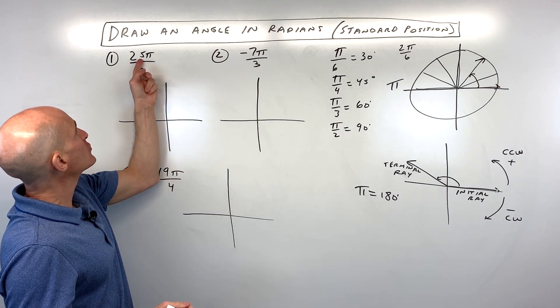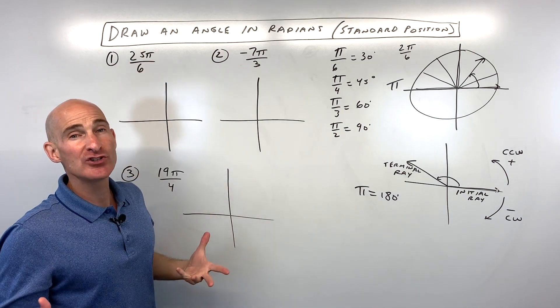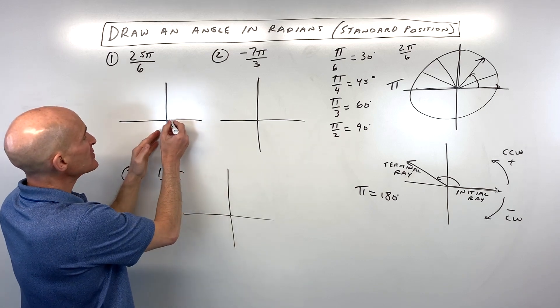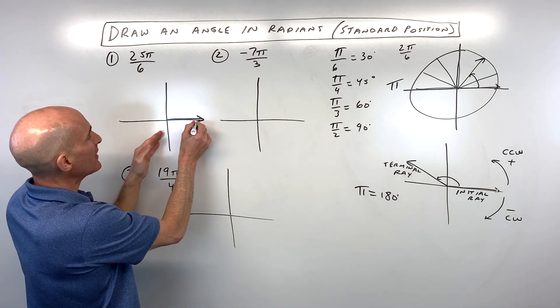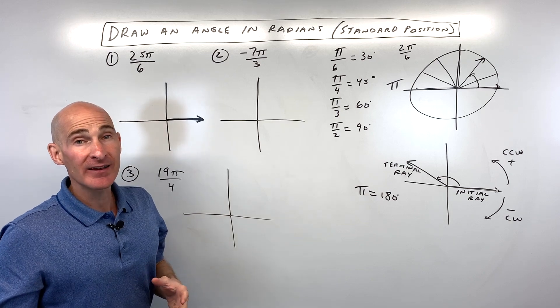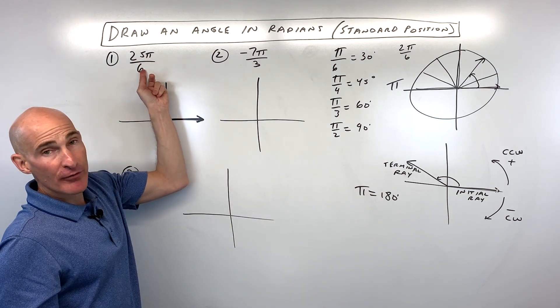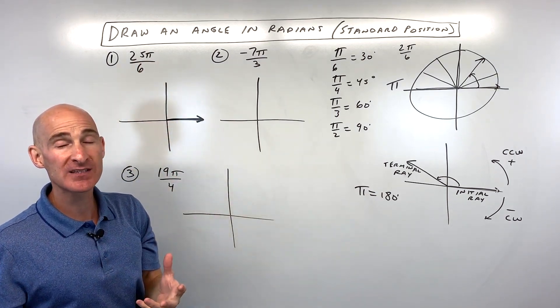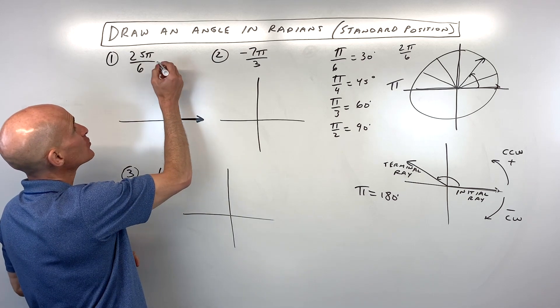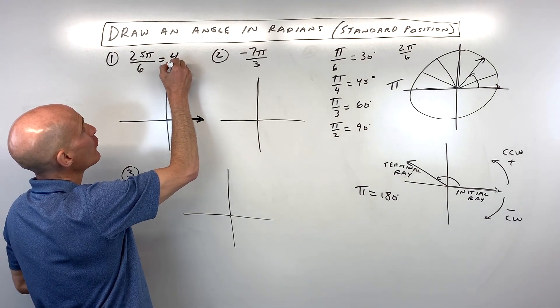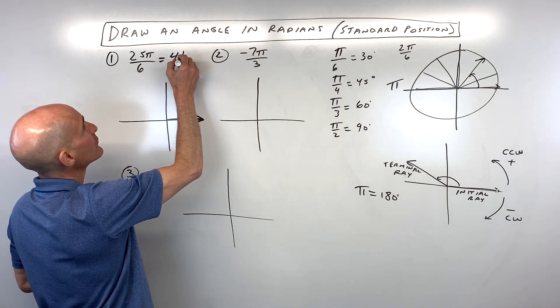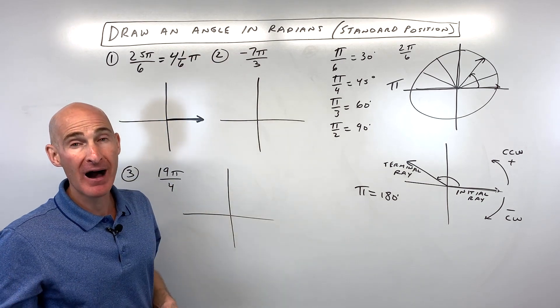Let me show you some examples. I think it'll get clearer as we go through this. Say, for example, number 1, 25 pi over 6. How would you sketch that? Well, the first thing we want to do is we want to draw our initial ray along that positive x-axis. And then what I like to do, especially when it's an improper fraction, is turn it into a mixed number. So 6 goes into 25 how many times? 4 with 1 left over. So that's really like 4 and 1 6th pi.